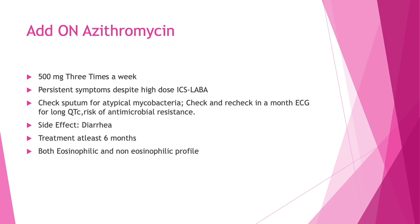Add-on azithromycin is increasingly relevant, especially for neutrophilic asthma where steroids are not very beneficial. Studies show that regardless of phenotype—eosinophilic or neutrophilic—azithromycin shows a lot of response. In patients with H. influenzae colonization, azithromycin works very well. The recommended dose for add-on azithromycin in severe asthma is 500 mg three times a week, given when symptoms persist despite high-dose therapy. Ensure the patient does not have mycobacterial or atypical infection, check ECG at diagnosis for QT interval, and repeat after one month. Be aware of antimicrobial resistance risk and possible side effects like diarrhea. Give treatment for at least six months.